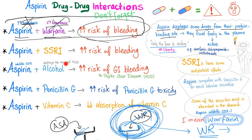Aspirin plus alcohol: aspirin inhibits cyclooxygenase, which is bad for your stomach lining, and excessive alcohol literally destroys the mucosal lining. Together, this increases the risk of GI bleeding and peptic ulcer disease.